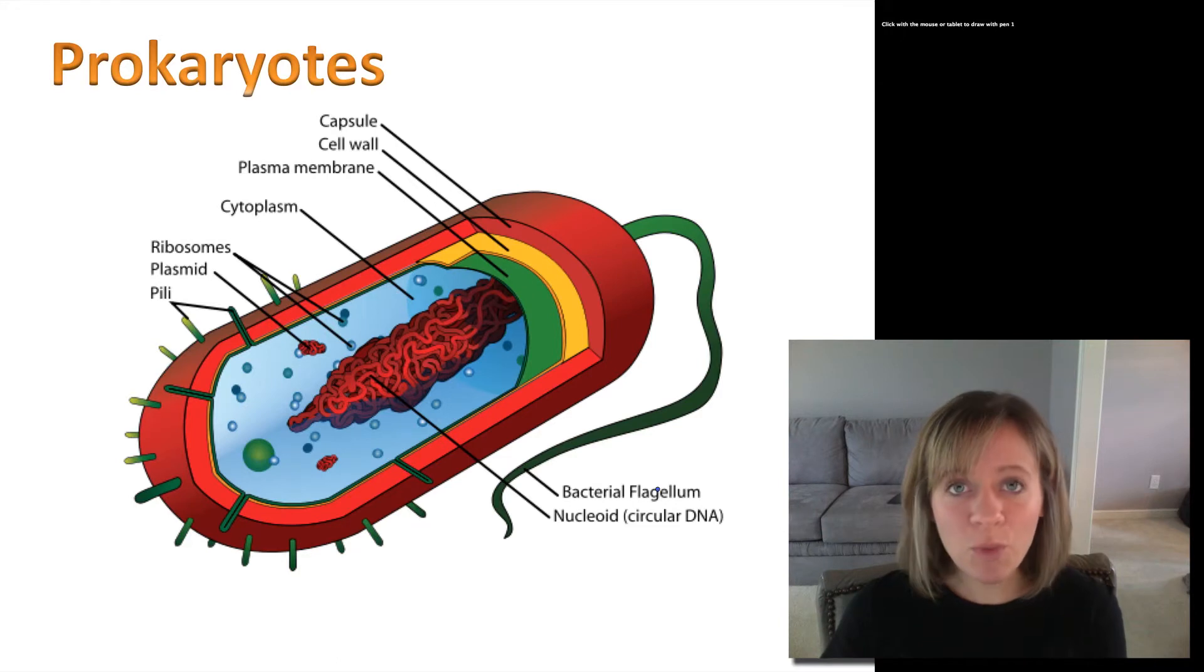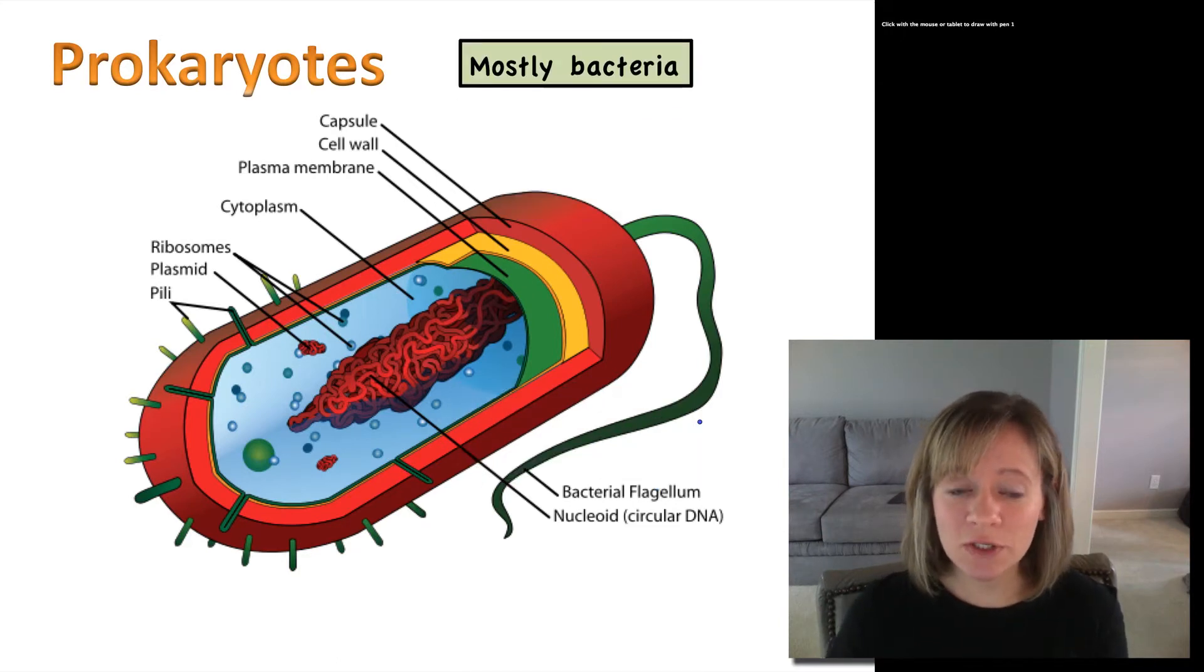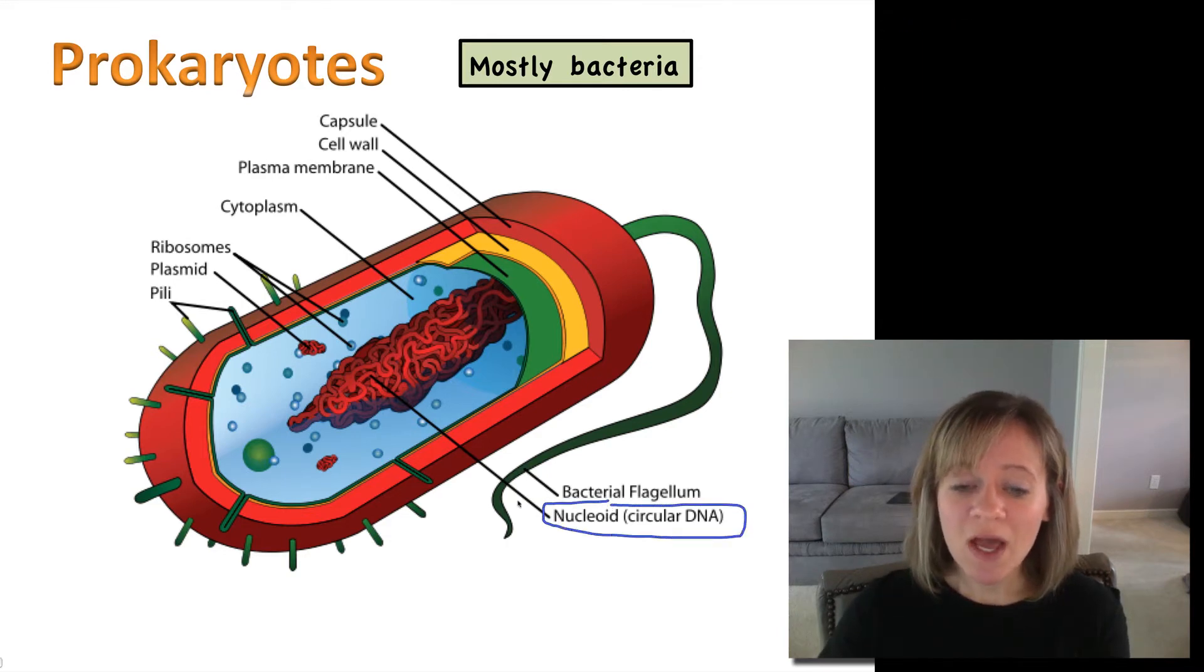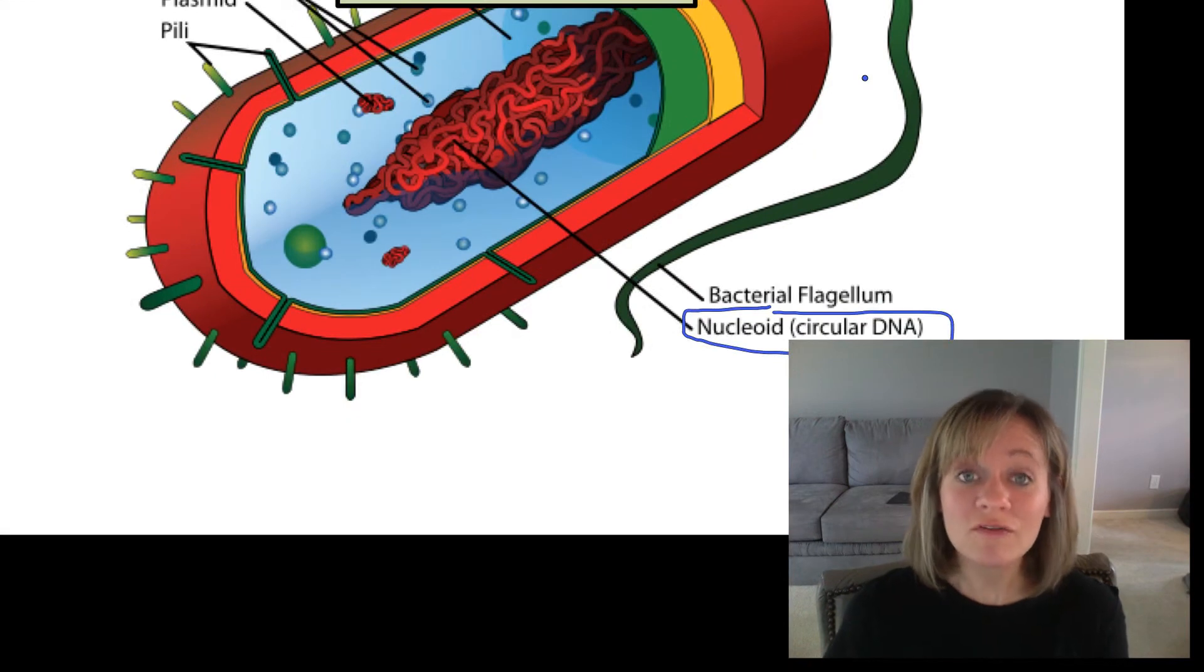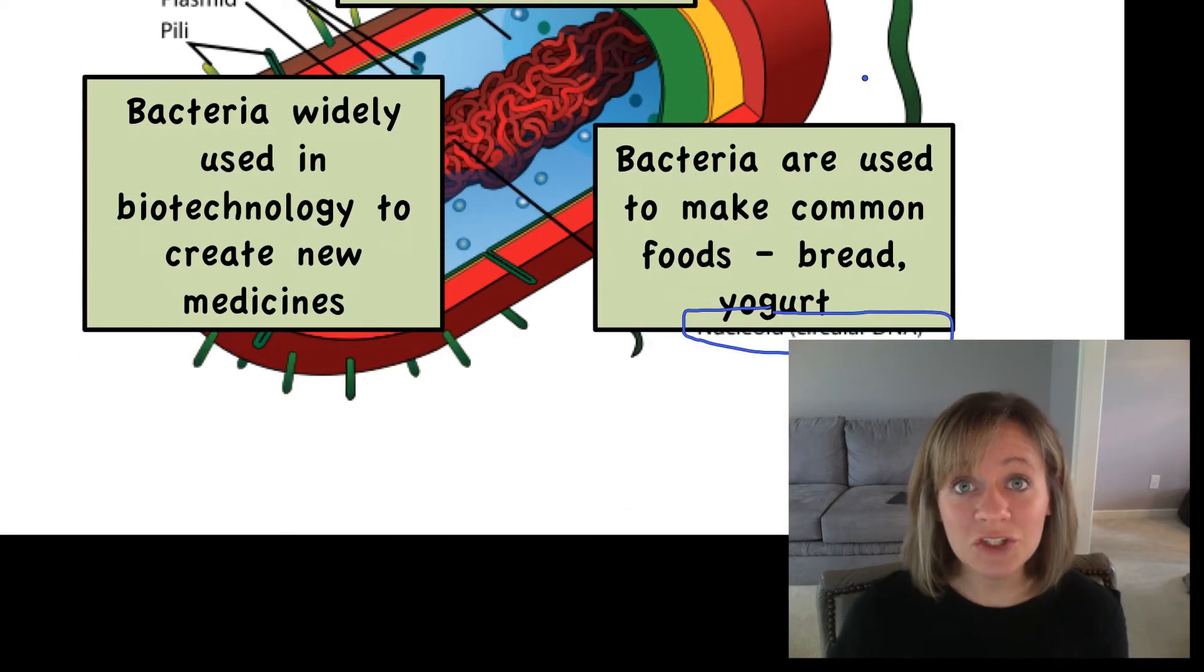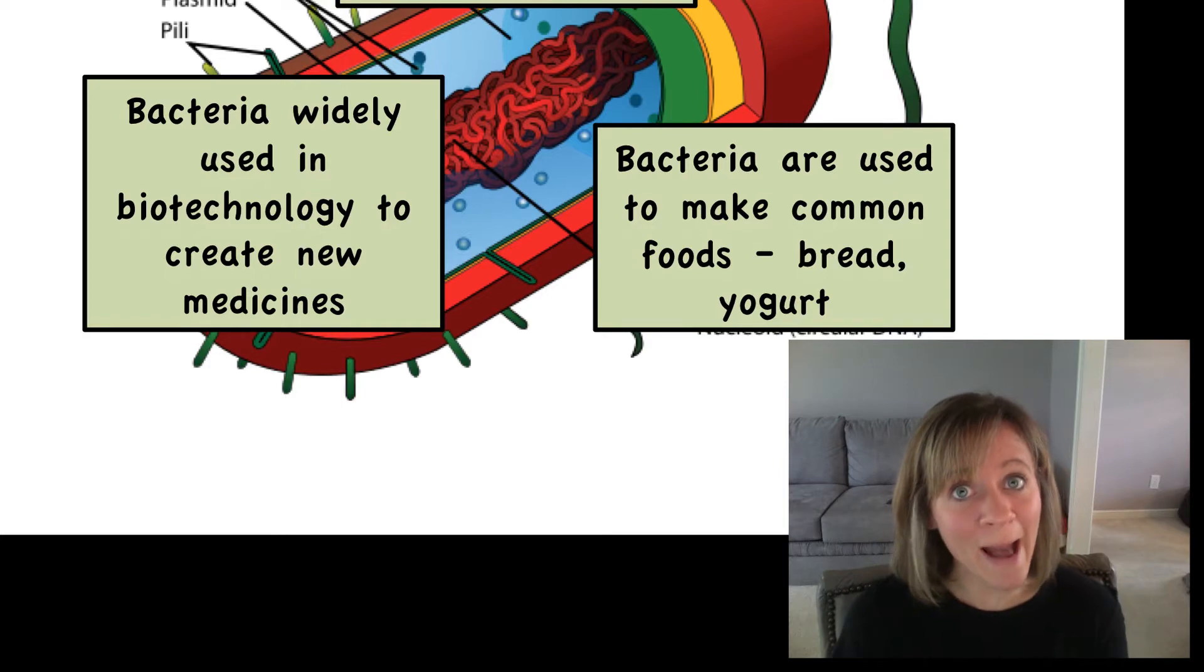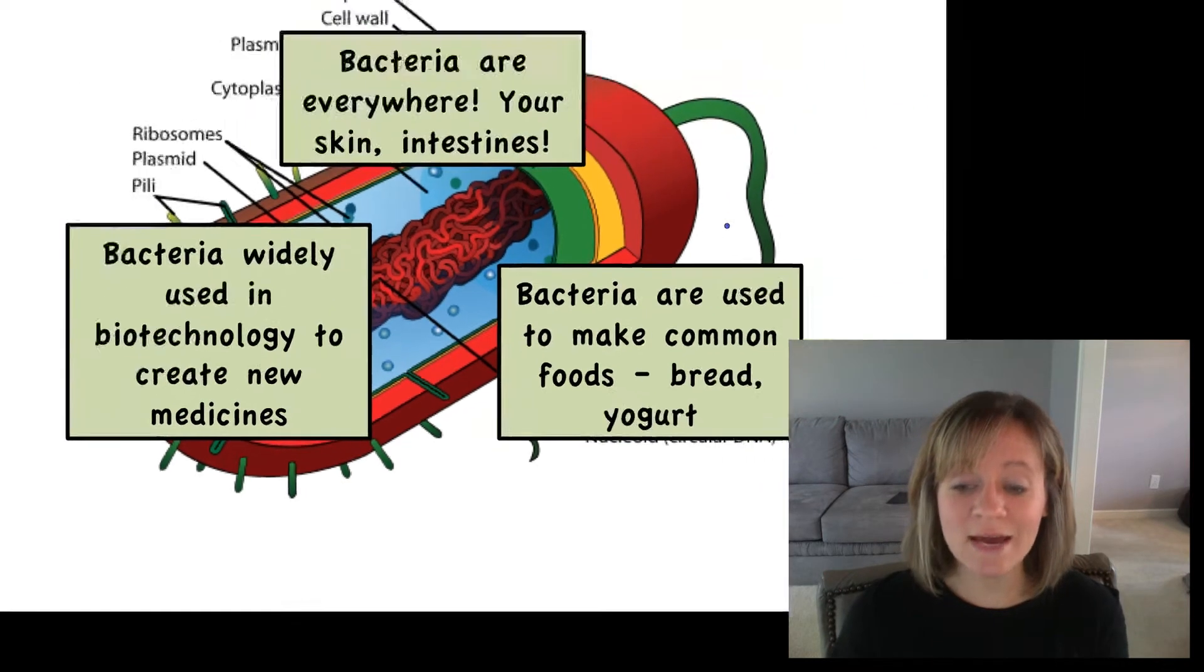Feel free to use the internet, use your book, whatever you'd like to make this chart in your notes, and we'll go over that in class. So just a little bit more information about prokaryotes. Like I said, prokaryotes are mostly bacteria. They don't have a true nucleus. Instead, they have this region called a nucleoid region. They can sometimes have this pili or cilia. They have a flagella, which we'll talk about later in the video. Bacteria are everywhere. They're in your skin, they're in your intestines, they help humans function. They're used widely in biotechnology to create new medicines, they're used to make food. Prokaryotes, bacteria, they are everywhere. They get a bad rap, don't they? But in fact, they can definitely be our friend.